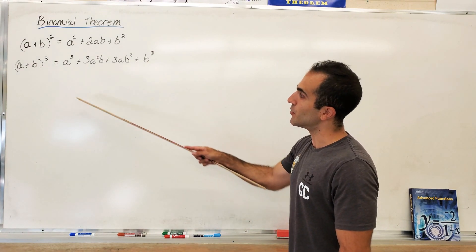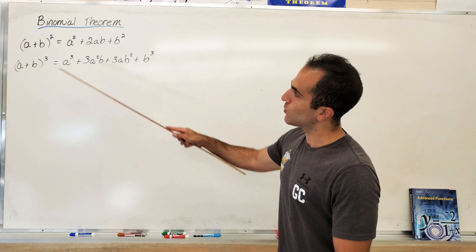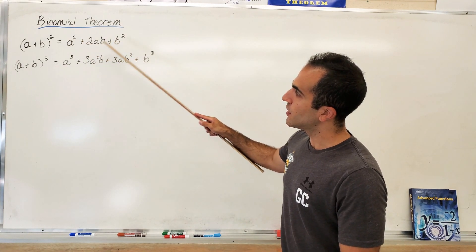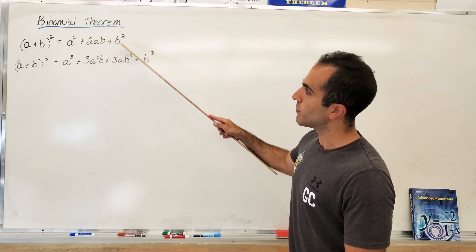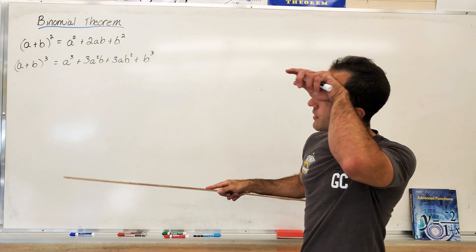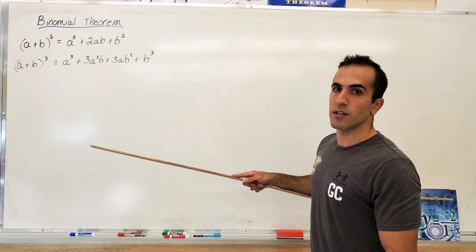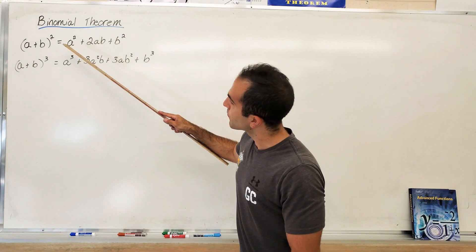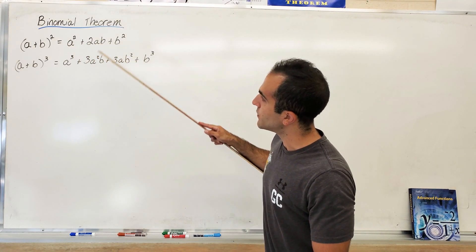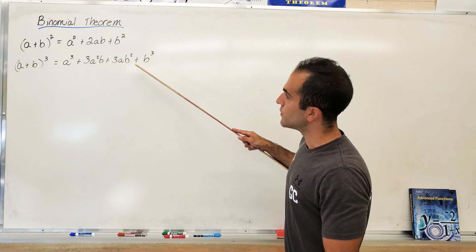Now the middle is a difficult part. Look what's happening to the a's. The exponent is falling by 1: a², a¹, a⁰ technically. Look over here: a³, a², a¹, and no a. And look what's happening to the b's: b⁰, b¹, b², b⁰, b¹, b², b³. So the a's fall and the b's climb. Always done.